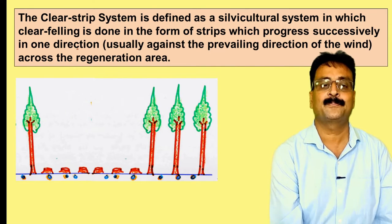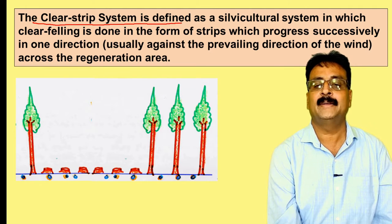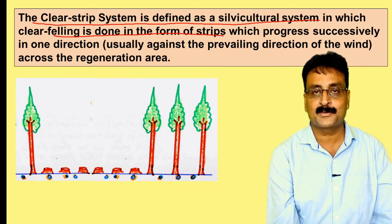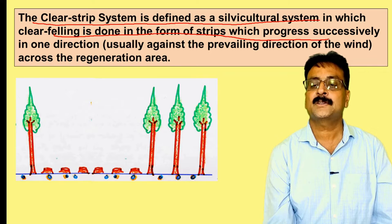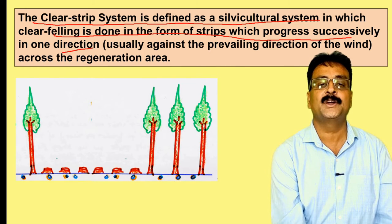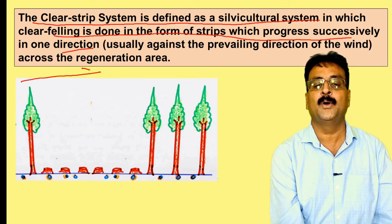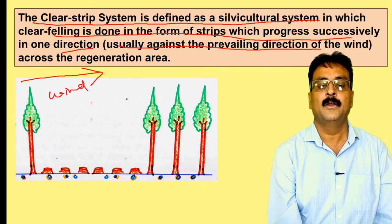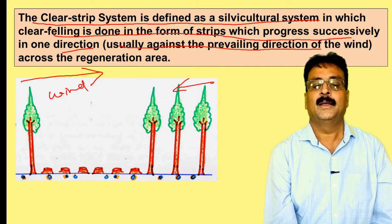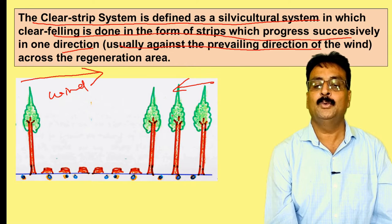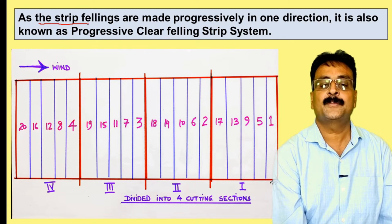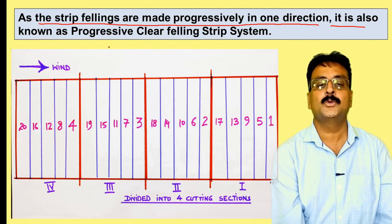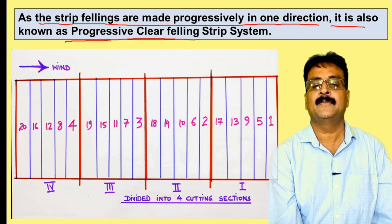The clear strip system is defined as a silviculture system in which clear felling is done in the form of strips, progressing successively in one direction — usually against the prevailing wind. Because the strip fellings are made progressively in one direction, it is also known as the progressive clear felling strip system.